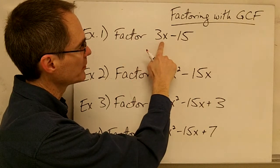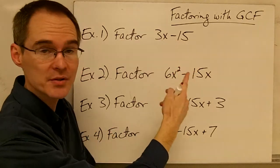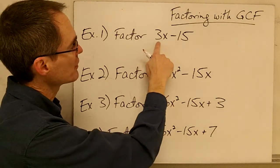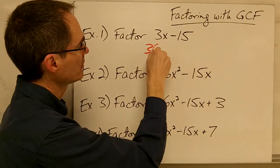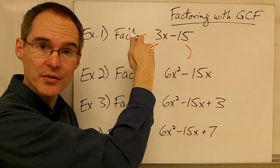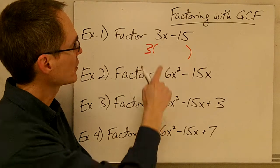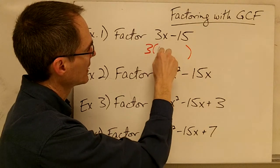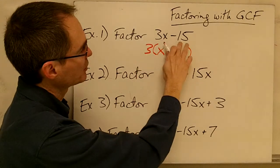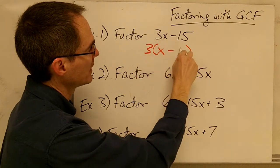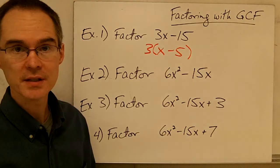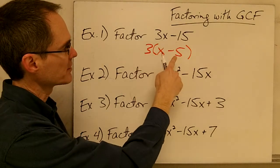So I can pull out a 3 from this term and a 3 from this term. When I say pull out, that's just another way of saying I'm going to factor it out. If I pull out that 3 and write it over here, I just want to ask myself what's left in each one of those terms. If I pull out a 3 out of 3x, I just have x left, because 3 times x gives me 3x. And if I pull a 3 out of negative 15, I'm going to have negative 5 left, because 3 times negative 5 is negative 15.